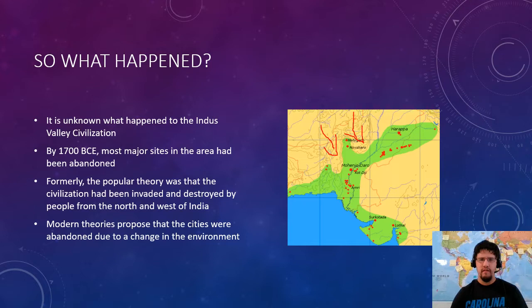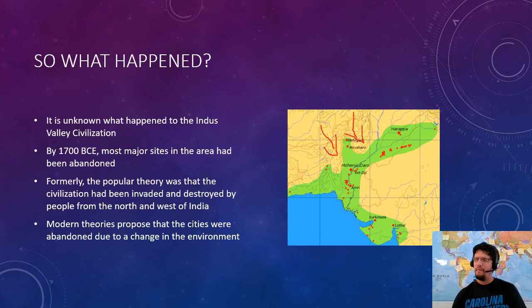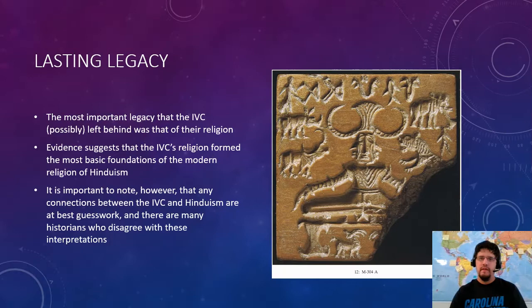Modern theories propose there was probably a change in the environment — maybe drought, maybe temperatures went up or down a bit. Remember, the building block of civilization is food: if your climate changes even a little bit, one failed monsoon, you've got a famine. There have been a lot of famines in Indian history. Since we haven't found mounds of bodies, broken bones, and burned cities, it probably wasn't invasion — it probably was a climatic change of some kind.